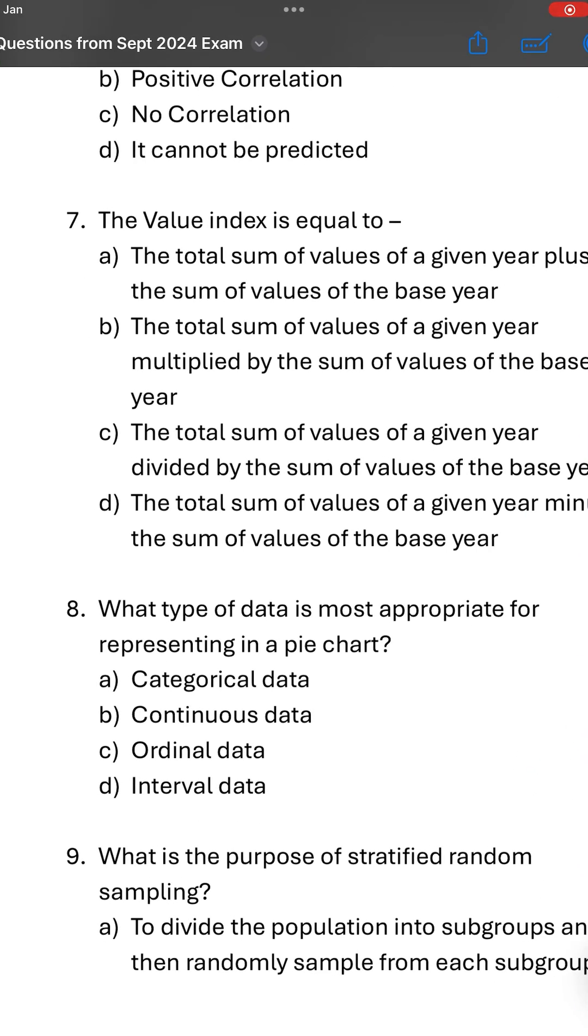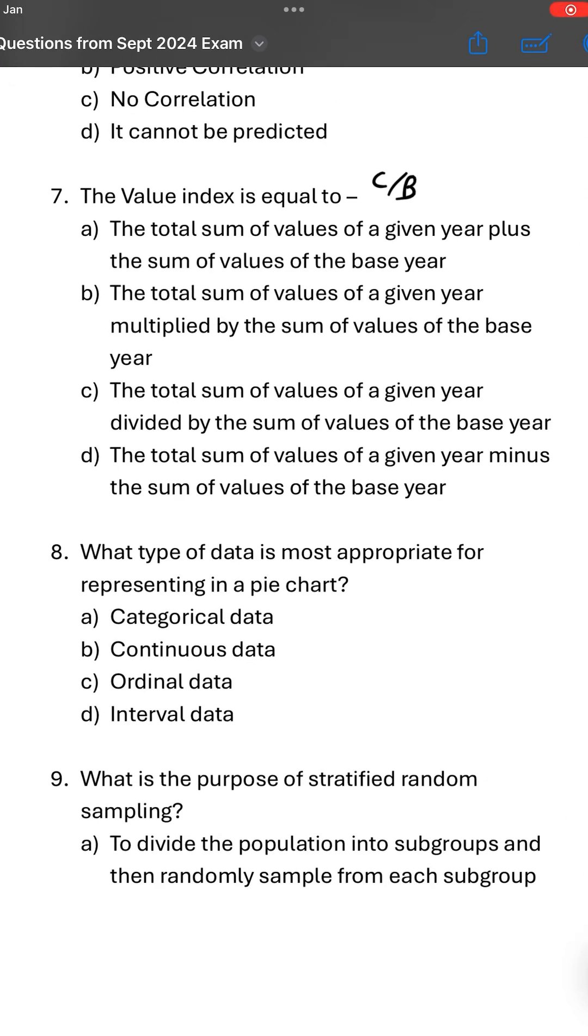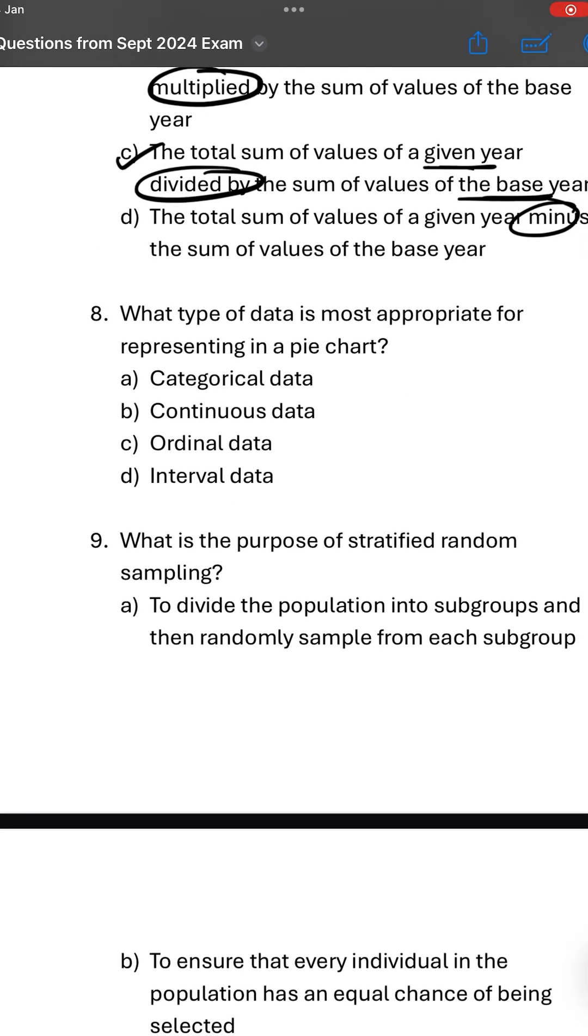The value index is equal to? Any index number is current year divided by base year. If you read, option C is most logical: sum of values of given year divided by sum of values of base year. So option C is the correct answer. Other options are plus multiplied by minus - illogical.